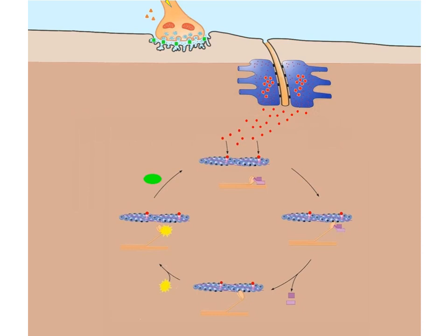Let's put it all together and take a look at a muscle contraction starting at the neuromuscular junction and ending with the myofilaments. An action potential travels down a motor neuron to the axon terminal and stimulates the opening of voltage-gated calcium ion channels, allowing calcium ions to diffuse in. This causes synaptic vesicles to fuse to the presynaptic membrane, releasing neurotransmitter into the synaptic cleft. The neurotransmitter binds to a chemical-gated sodium ion channel, opening it and allowing sodium ions to diffuse across the sarcolemma, creating a new action potential in the muscle fiber.